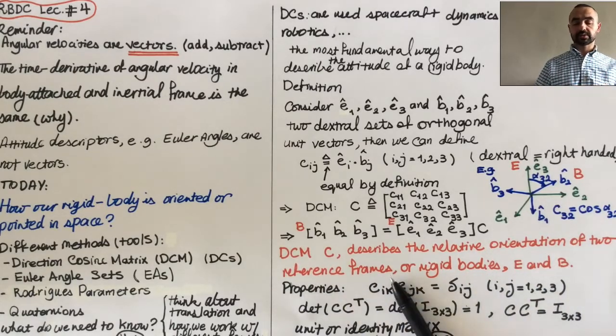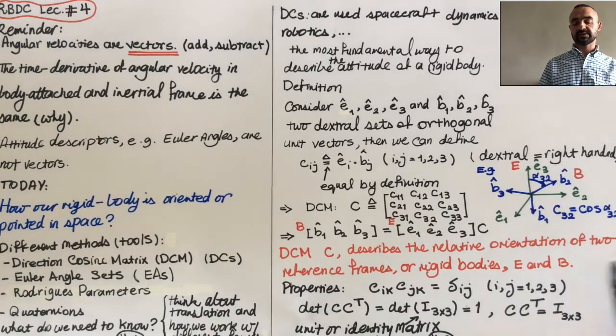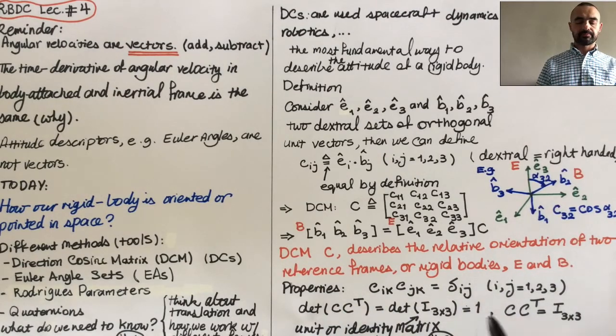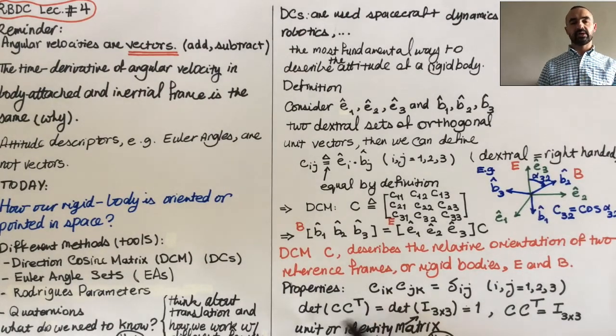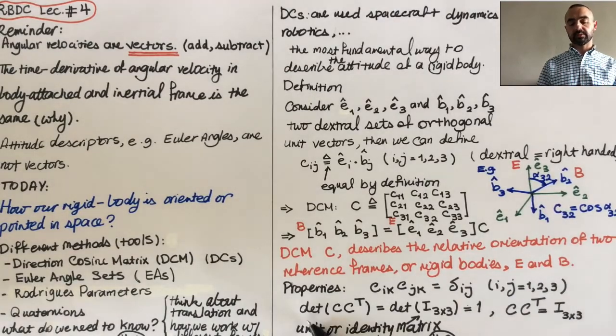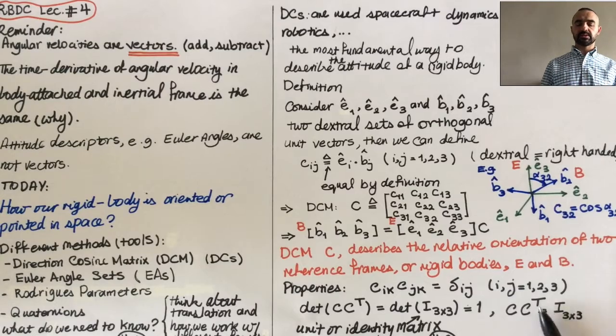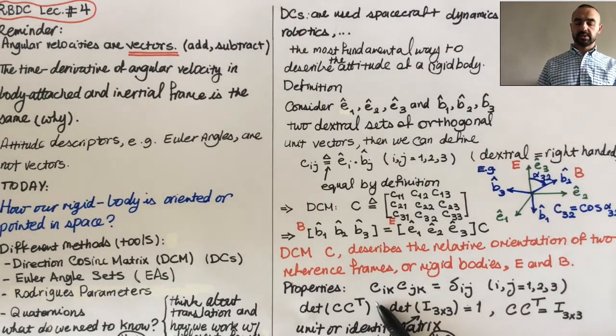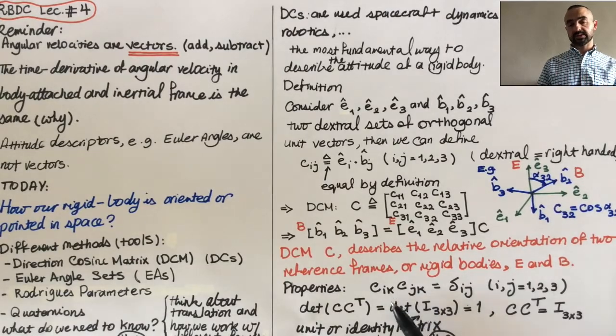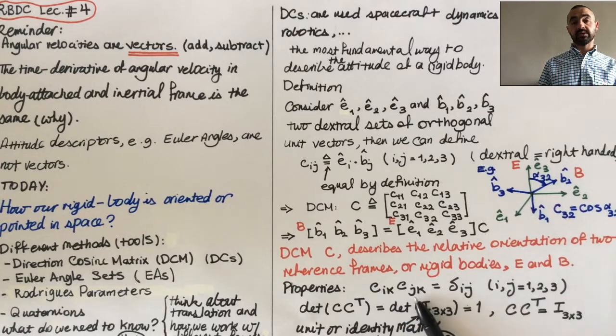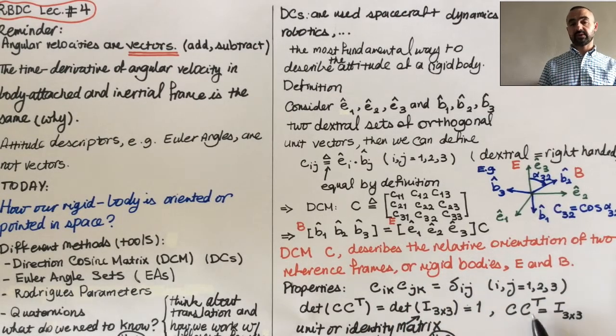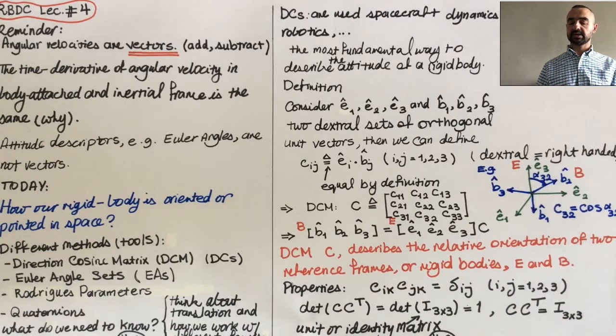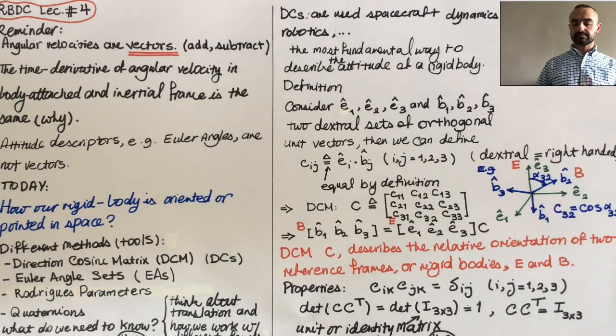So direction cosine matrix describes the relative orientation of two reference frames or rigid bodies E and B. A couple properties: if you write C and C transpose, then you can show if you just simply expand that, you can show that the determinant of CC transpose is equal to one, and CC transpose itself is identity matrix. Or you can just use summation notation. This summation convention says that if an index is repeated, it means that you sum over that. If it is not easy for you to see it this way, then just look at the matrix form, and I in this case is identity matrix.